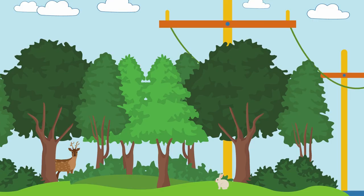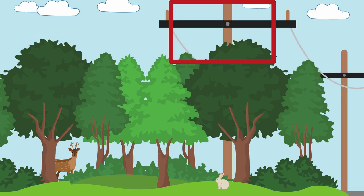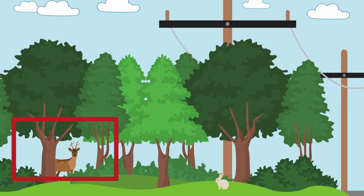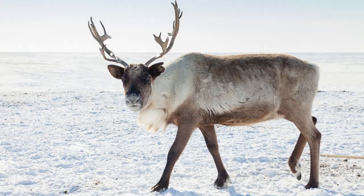Look at this picture — what do you see? Maybe you see some power lines, a few trees, an animal or two. What colors are there? Green, black, some brown. What if I told you that if you were a certain kind of animal — maybe a reindeer, for example —